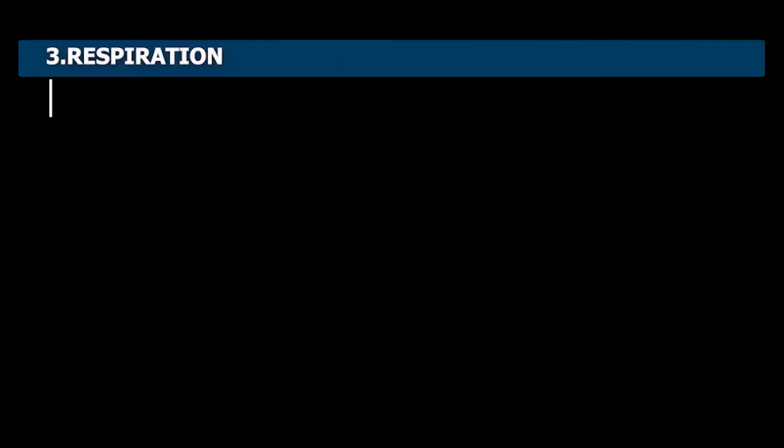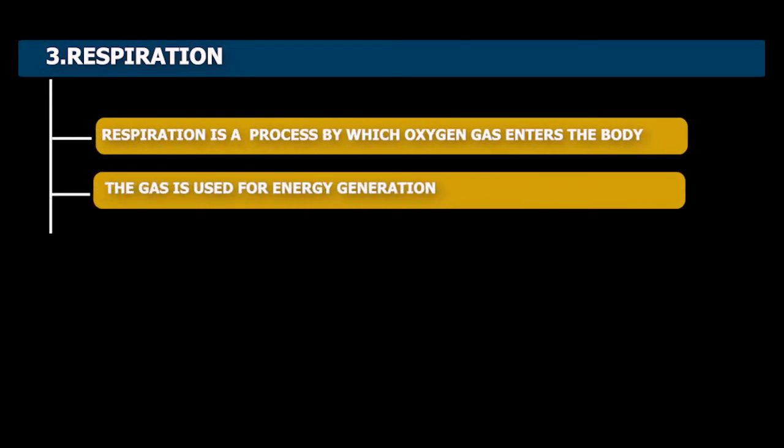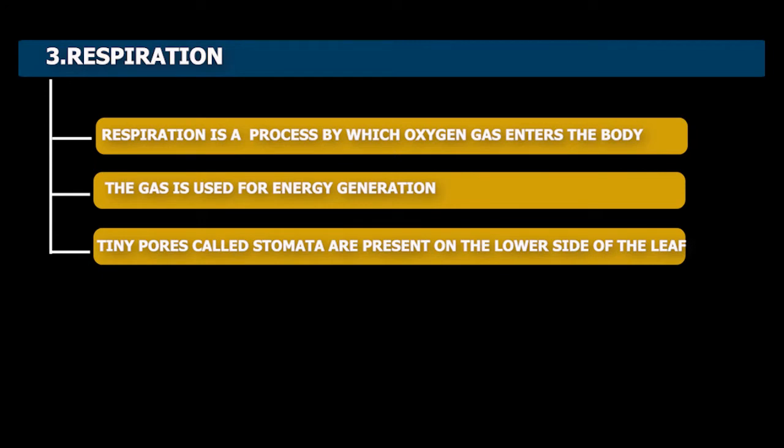3. Respiration. Respiration is a process by which oxygen gas enters the body where it is used for energy generation. On the lower side of the leaf, there are tiny pores or openings known as stomata.